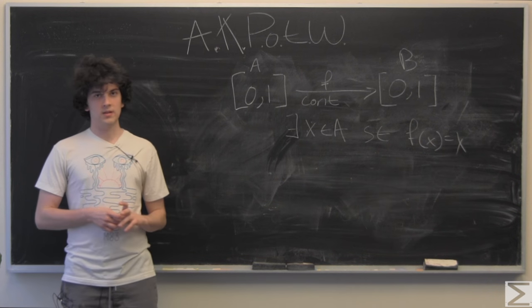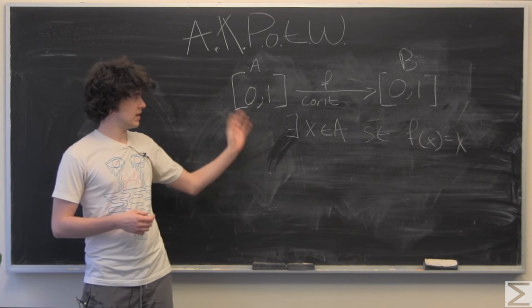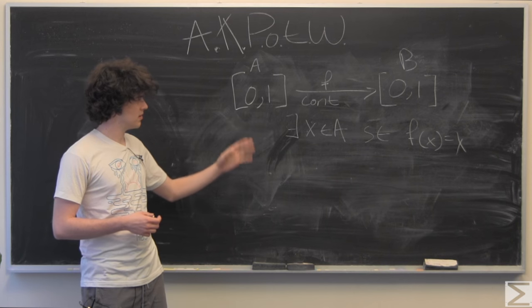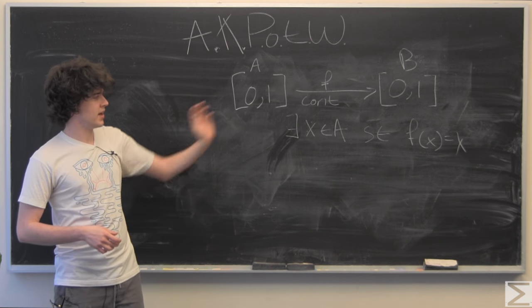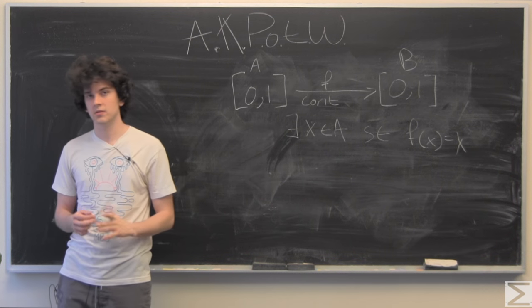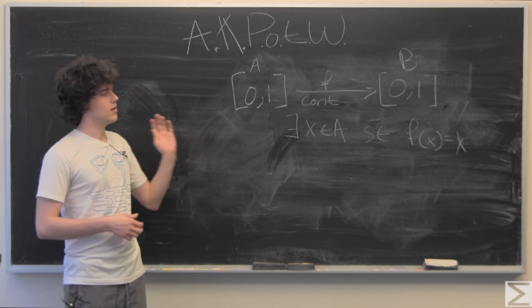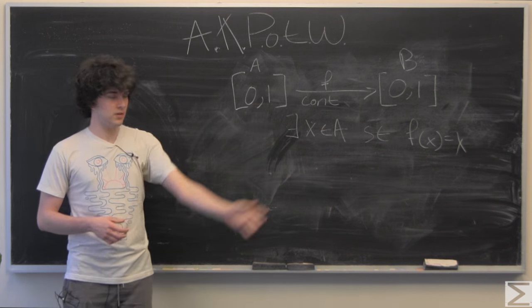This week we're trying to prove that there exists an x in our domain, which I've called A, such that f of x equals x, and f is a continuous function, an arbitrary continuous function that maps the unit interval to the unit interval.